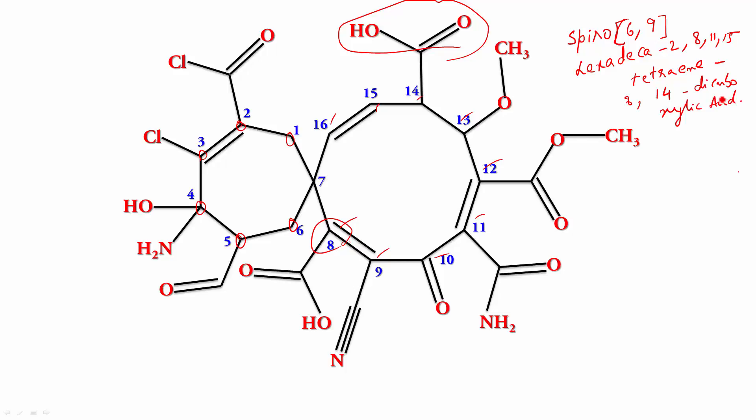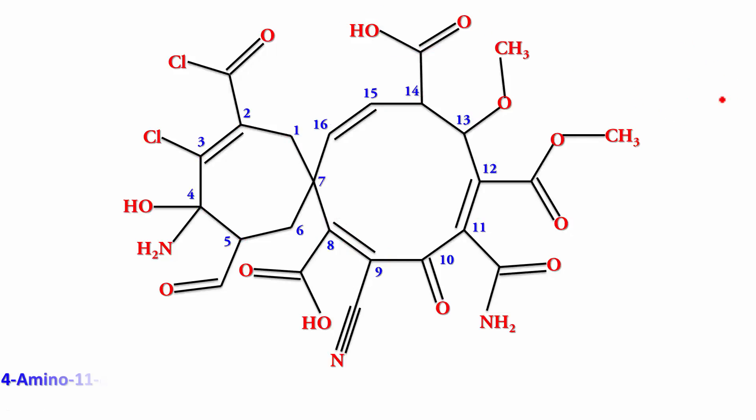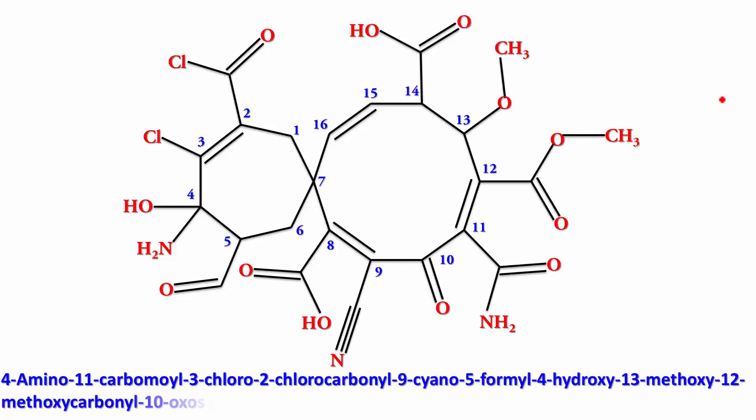And since there are a lot of double bonds here, hexadeca. And where all do you have the double bonds? 2, 8, 11, 15. Tetraene. And of course, after that, then you're going to have some more. I think you have an acid here. So, it's going to end with carboxylic acid. So, that is going to be 14. And perhaps one more carboxylic acid even sitting at 8. 8,14-dicarboxylic acid. And then all the prefixes. So, this is the huge name. Take your time. 4-amino-11-carbamoyl-3-chloro-2-chlorocarbonyl-9-cyano-5-formyl. In fact, the 5-formyl, you can even call it oxo. So, 5-formyl-4-hydroxy-13-methoxy-12-methoxycarbonyl-10-oxospiro[6.9]hexadeca-2,8,11,15-tetraene-8,14-dicarboxylic acid.